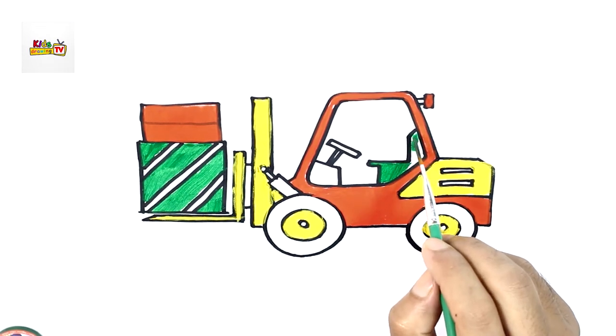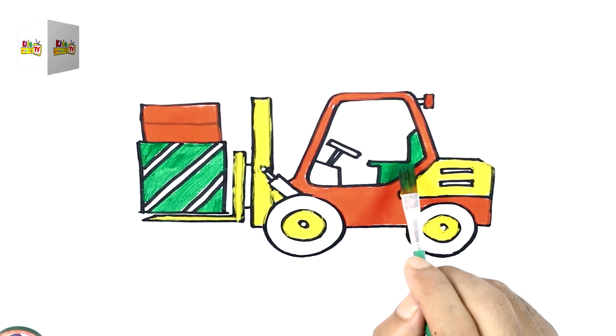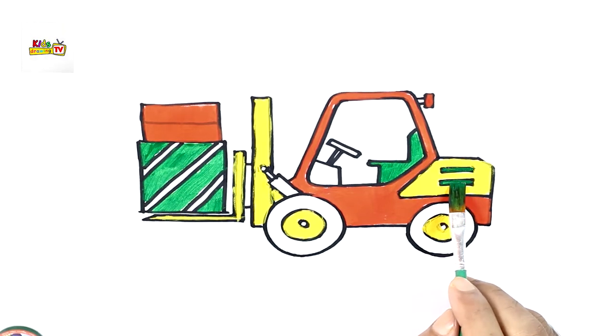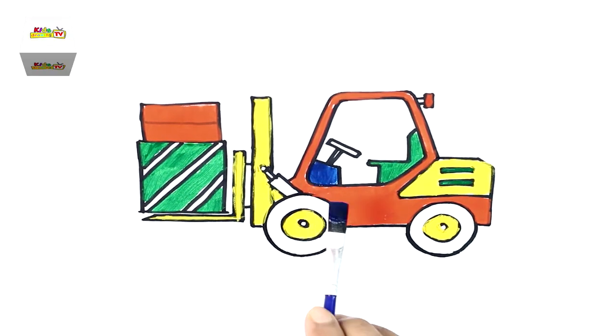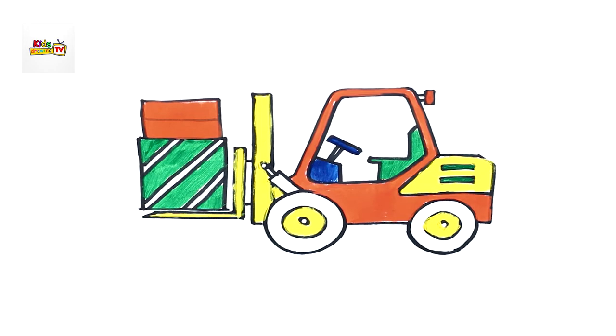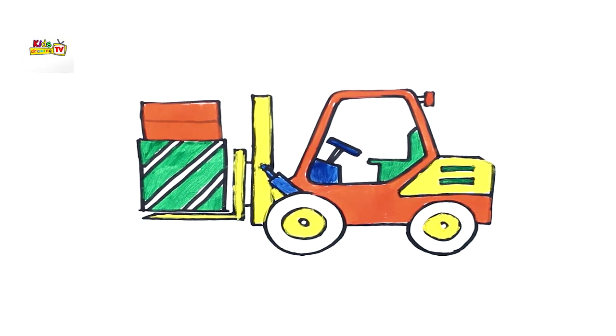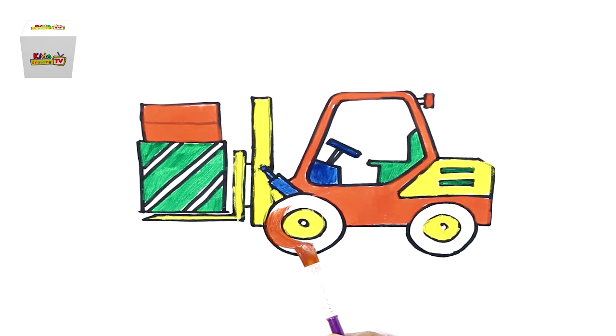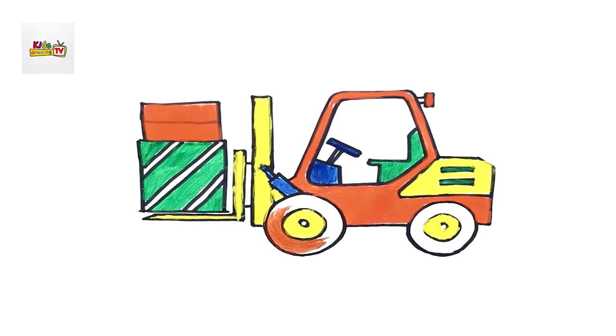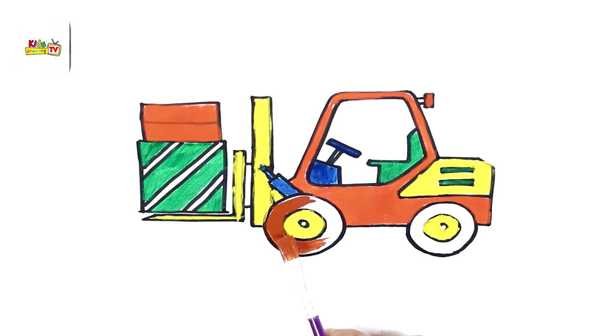And I'm using the green color for the seat. Oh, so driver's seat is green. Looks good. And maybe yellow color for the tire also. Why are you not using black?